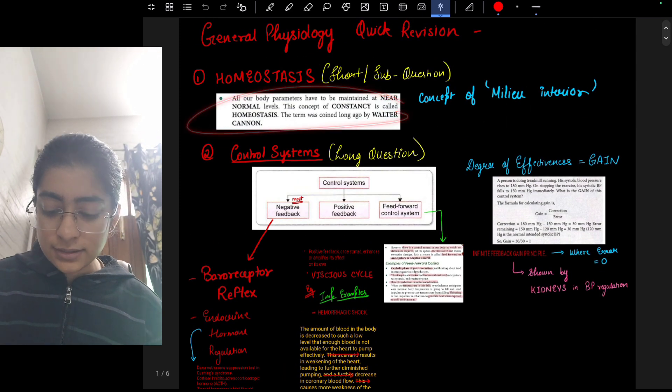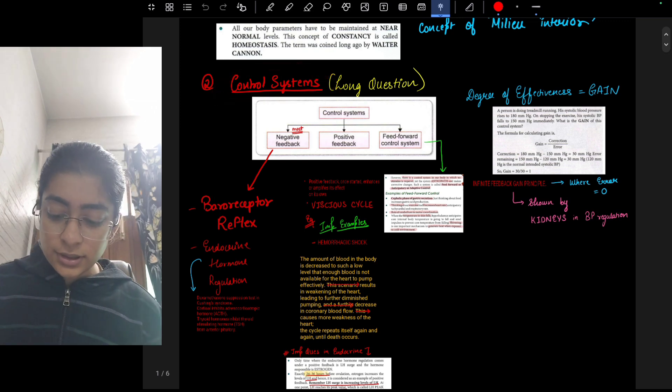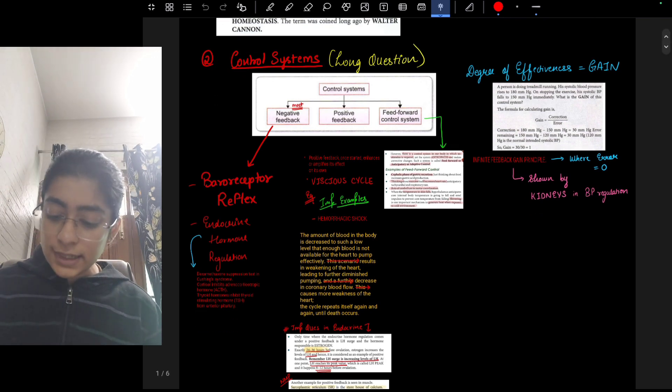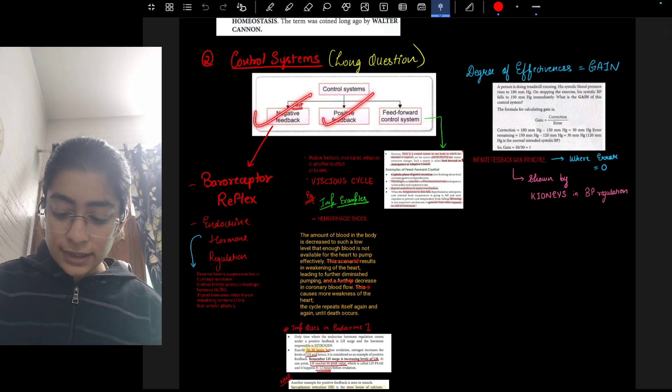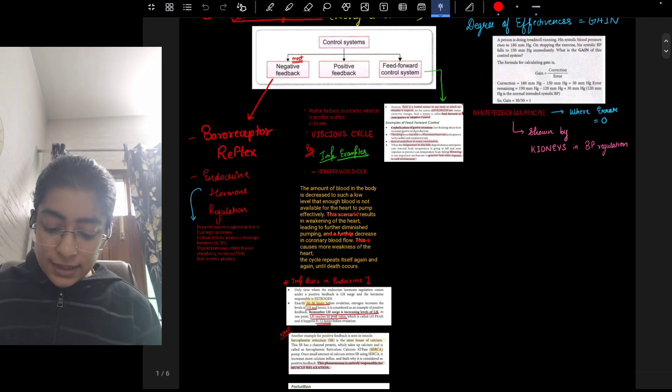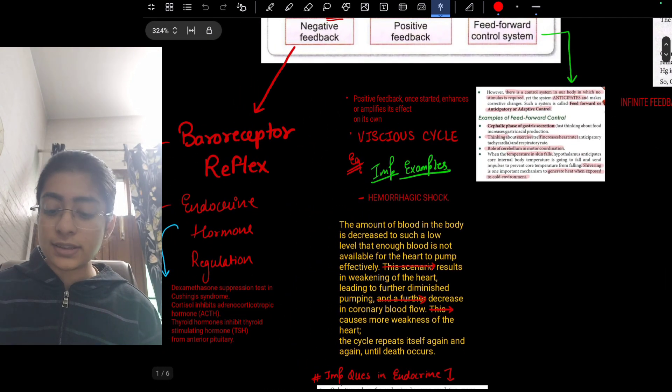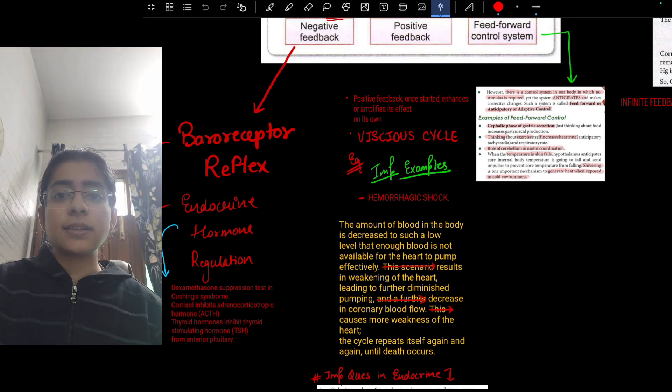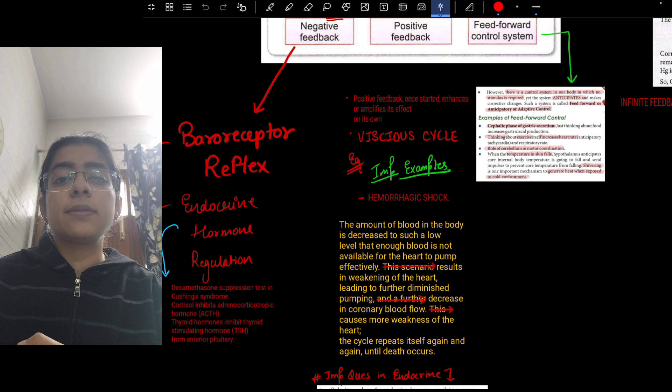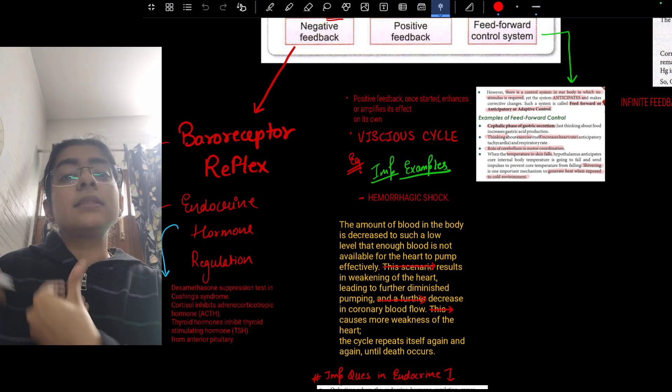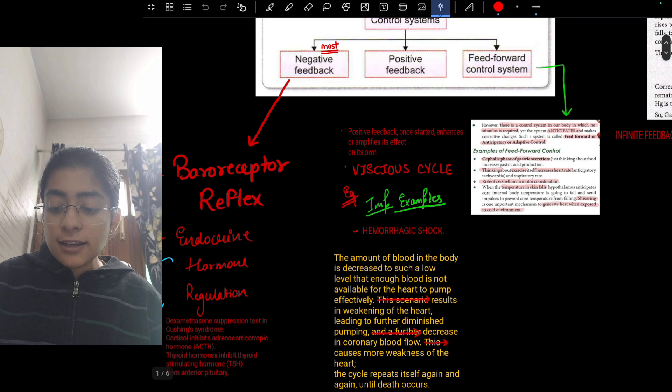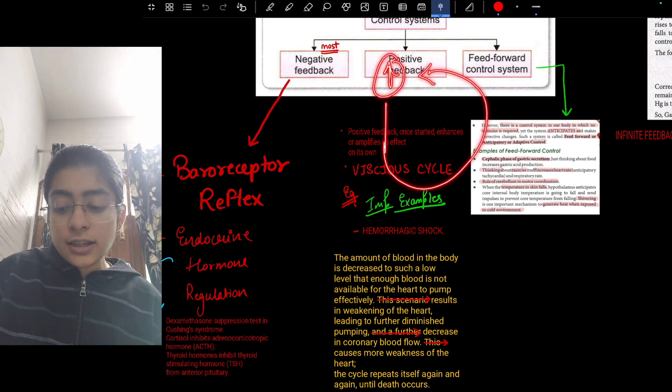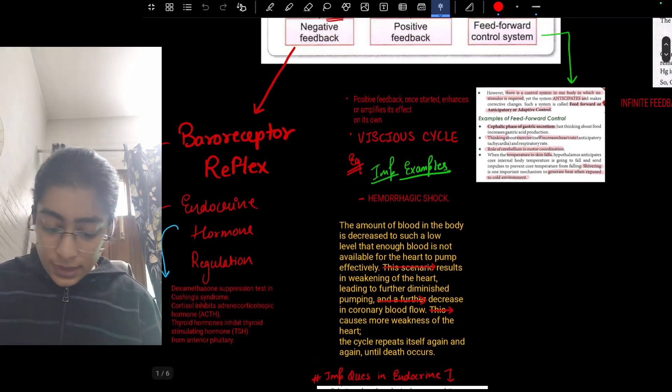Control systems can come as a long question and you need to write the three. Sometimes we forget about the third that is the feedforward. So negative, positive, and feedforward control system. In negative feedback, we are having like the baroreceptor reflex. If there is increase in some hormone level that resultant increase will eventually inhibit that further increase. But if that increase in hormone level will further increase it, then we say it is positive feedback.